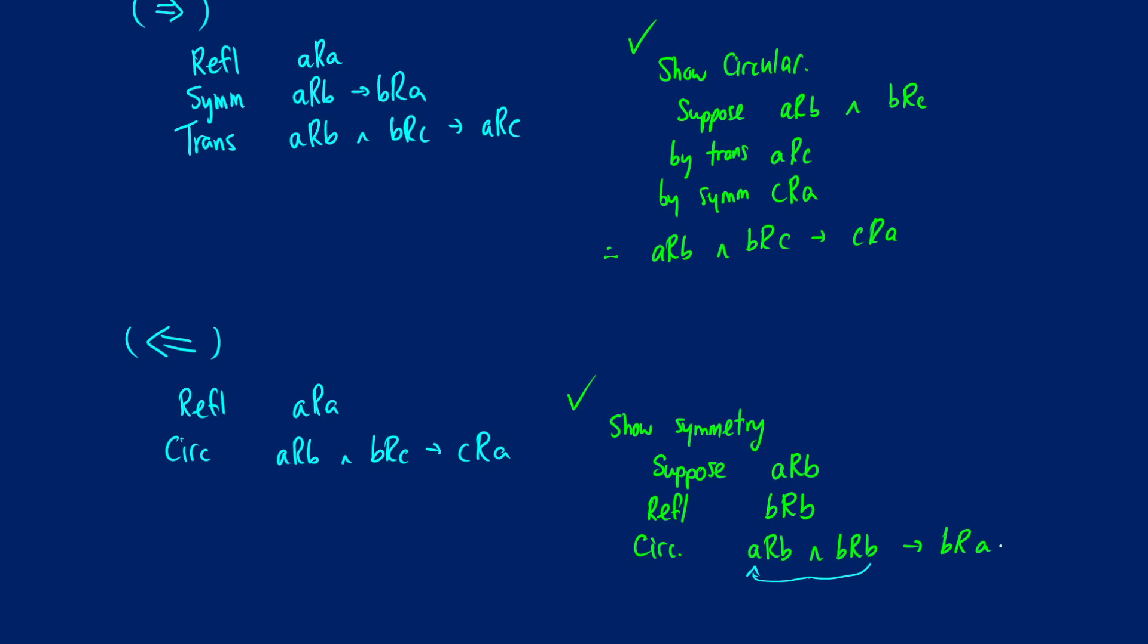So if we have reflexivity and circularity, then we can get symmetry out of it. So we've done our symmetry.